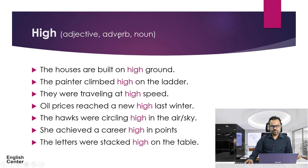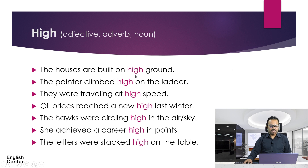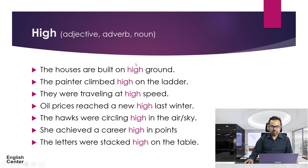This word 'high' can be an adjective, can be an adverb, and also a noun. Let's have a look at the examples here. The houses are built on high ground. In this example, 'high' is an adjective. We can identify it as an adjective because 'ground' is a noun, and a noun can be modified by an adjective. So this way, 'high' is an adjective.